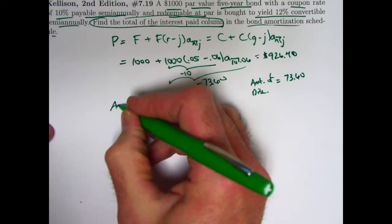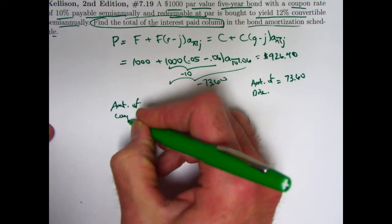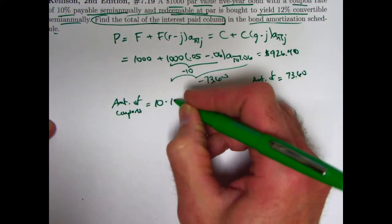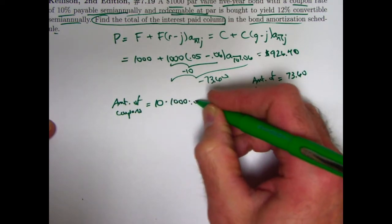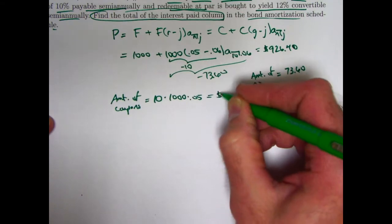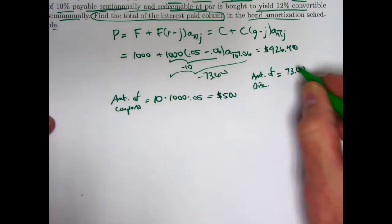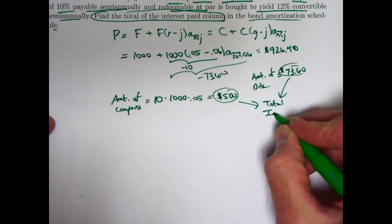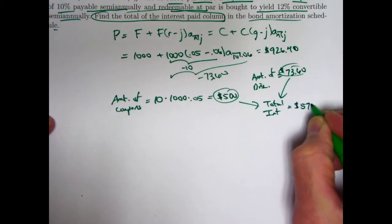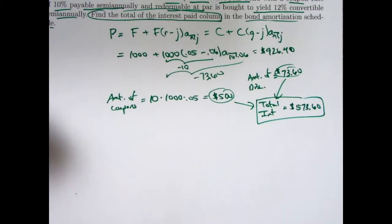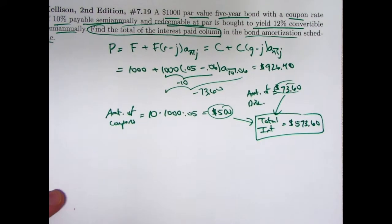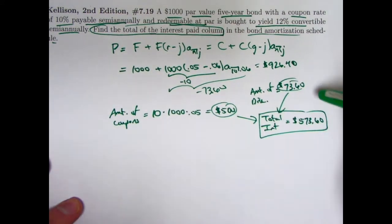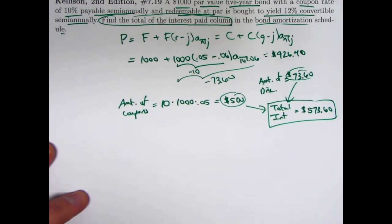What is the amount of all the coupons? Coupons, that's going to be 10 coupons times f times r or times c times g is times a thousand times 0.05. We get 10 times 50. We get $500 for the amount of all the coupons. That's all interest. This is all interest. Add those up to get the total interest paid. The final answer for the total interest is going to then be $573.60. That's definitely the best way to go for this problem, knowing the concept that when the bond is bought at a discount, not only are the coupons all interest, but also the amount of the discount will be interest. You need to add those together. All right.